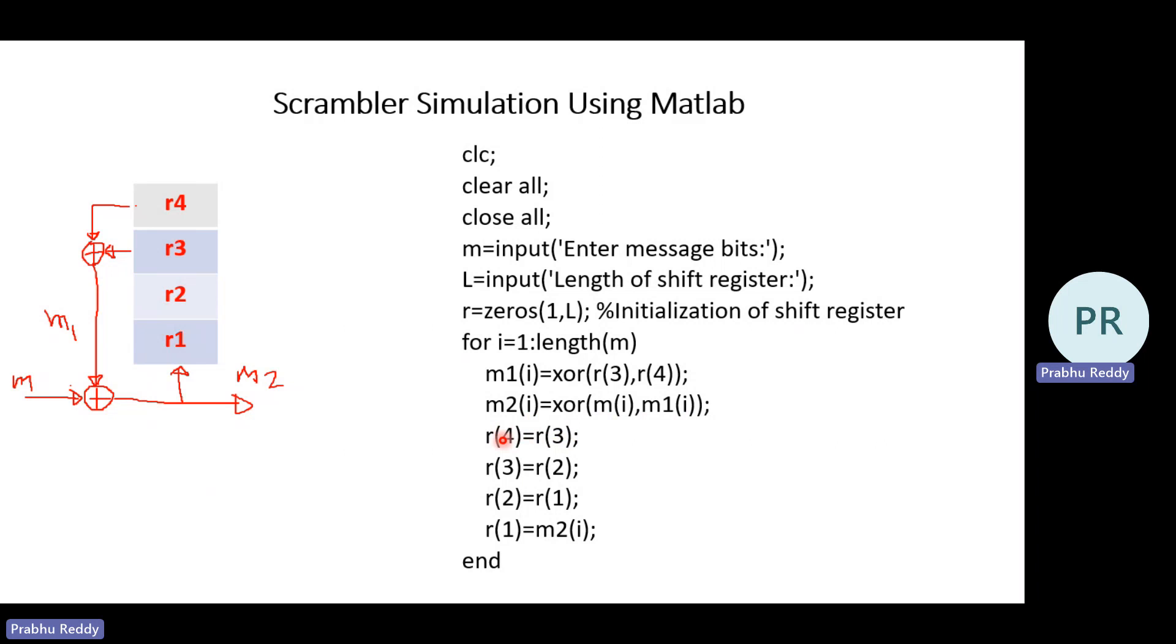Then R4 is equal to R3. So what exactly it is doing here? The shift register contents are shifting. As the clock is applied, shift register contents are shifting. R3 is aligned with R4, R2 is assigned to R3, R1 is assigned to R2 and M2 of I is assigned to R1. R4 is equal to R3, R3 is equal to R2, R2 is equal to R1, R1 is equal to M2 of I and I am ending the contents. So in M2, I am having the scrambled information. So this is a scrambling process.